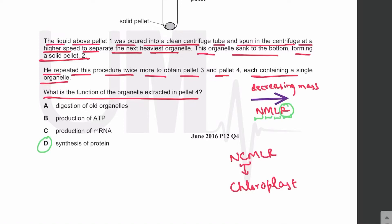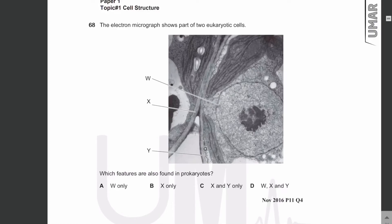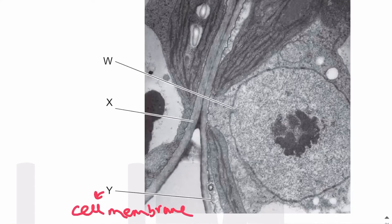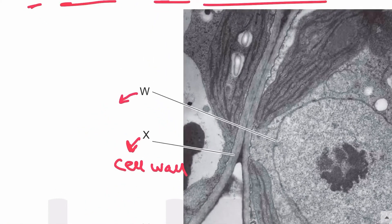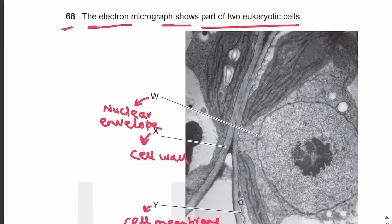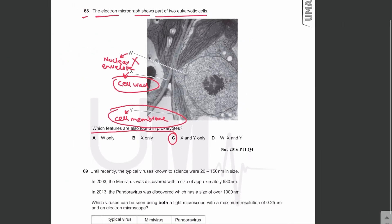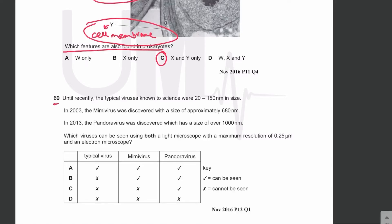MCQ 68: An electron micrograph shows part of two eukaryotic cells. Identifying the features: Y is the cell membrane (layer attached to the cell wall), X is the cell wall, and W is the nuclear envelope. Prokaryotes contain a cell membrane and a cell wall but no nuclear envelope. So only X and Y are present in prokaryotes.